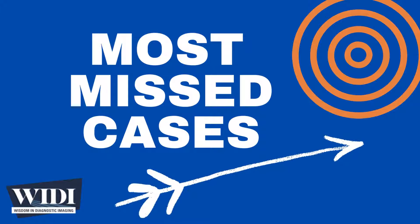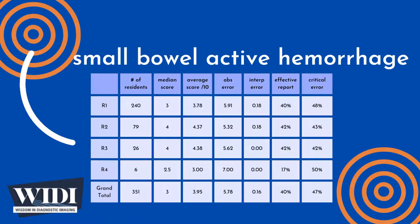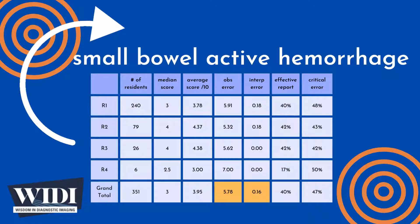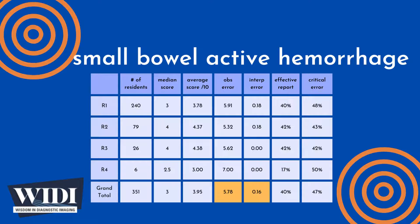Over the last 10 years, the Department of Radiology at the University of Florida College of Medicine has conducted a simulation-based evaluation of radiology resident competence in critical care imaging. 351 residents interpreted this case of small bowel active hemorrhage as one of 65 cases during an eight-hour simulated on-call shift, with a median score of 3 out of 10 and an overall average score of 3.95 out of 10. On average, 5.78 points out of 10 were lost due to missed observations, while 0.16 points were lost due to interpretive errors.